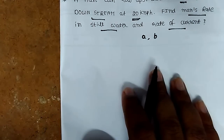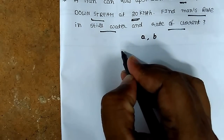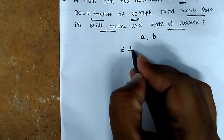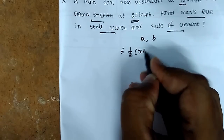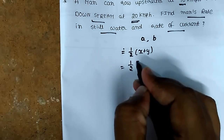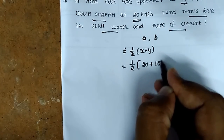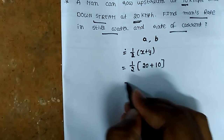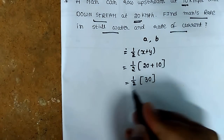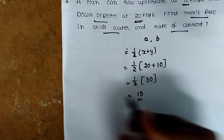So the first formula is to find the man's speed in still water. This formula is half of x plus y. So x is downstream speed, that is 20. Y is upstream speed, that is 10. So half of 20 plus 10 is half of 30, which is 15. So 15 is the man's speed in still water — that is A.